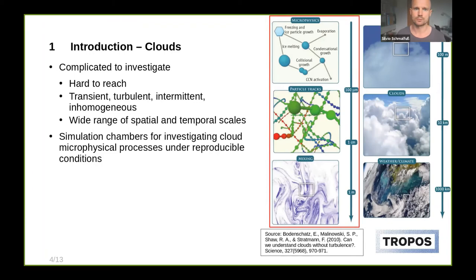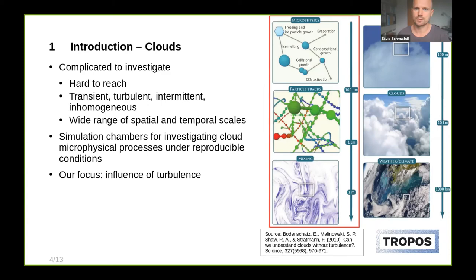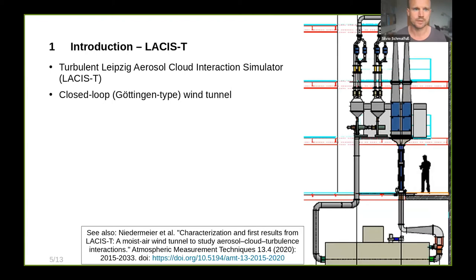For this reason, simulation chambers have been used for investigating cloud microphysical processes under reproducible conditions, focusing on microphysical scales. Our focus is the influence of turbulence on cloud microphysics and the interaction with aerosol. For this we have LACIS-T — the Turbulent Leipzig Aerosol Cloud Interaction Simulator — a closed-loop wind tunnel where flow goes in a clockwise direction through two branches with up to 5,000 liters per minute of airflow each, allowing precise definition of thermodynamic and flow conditions.